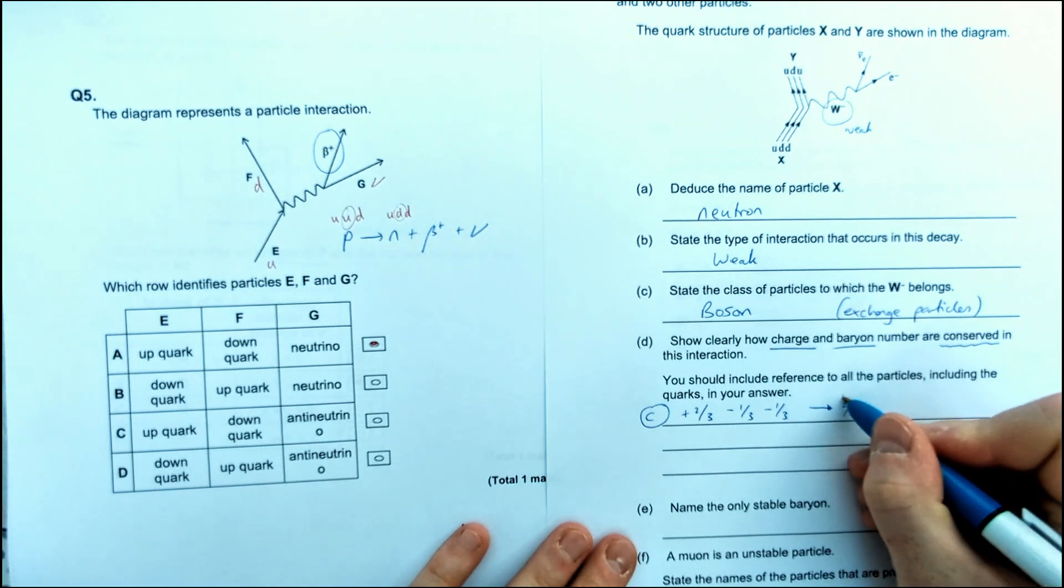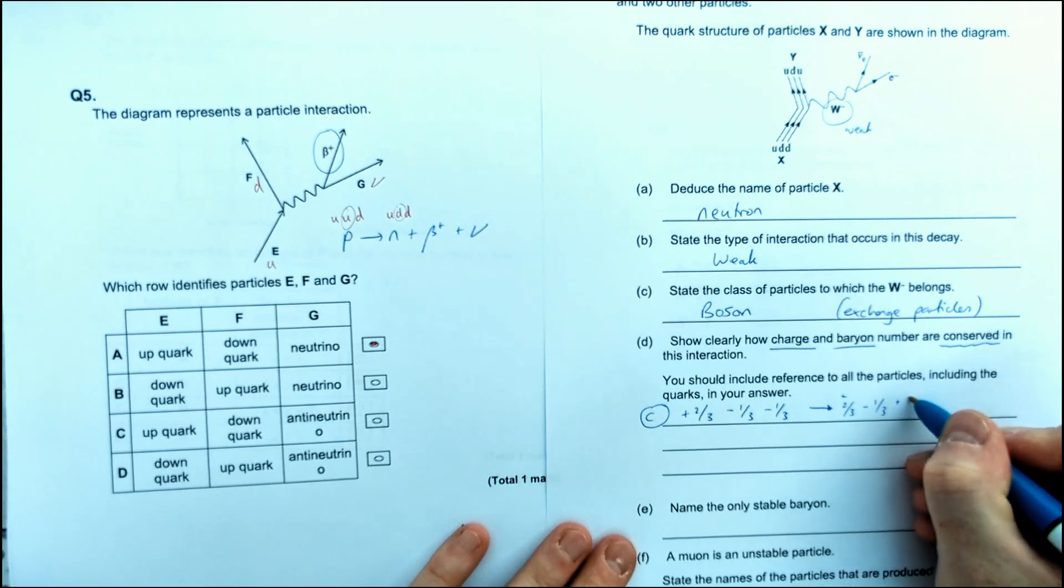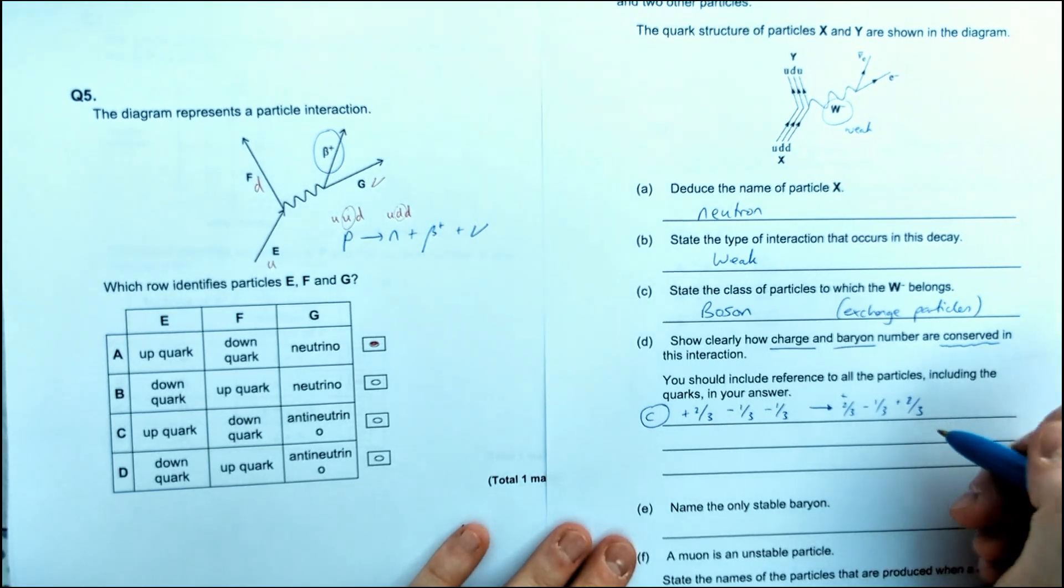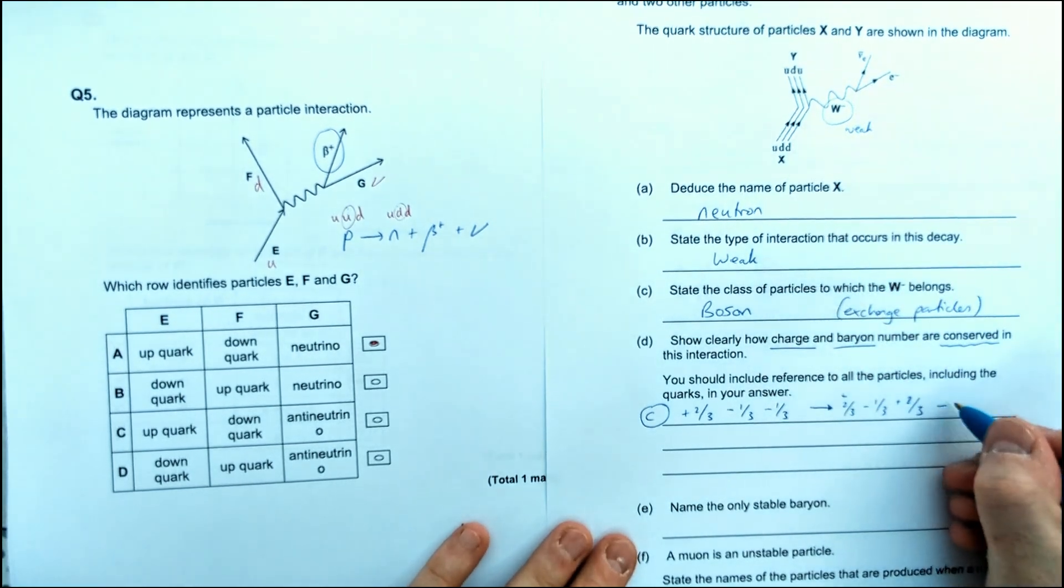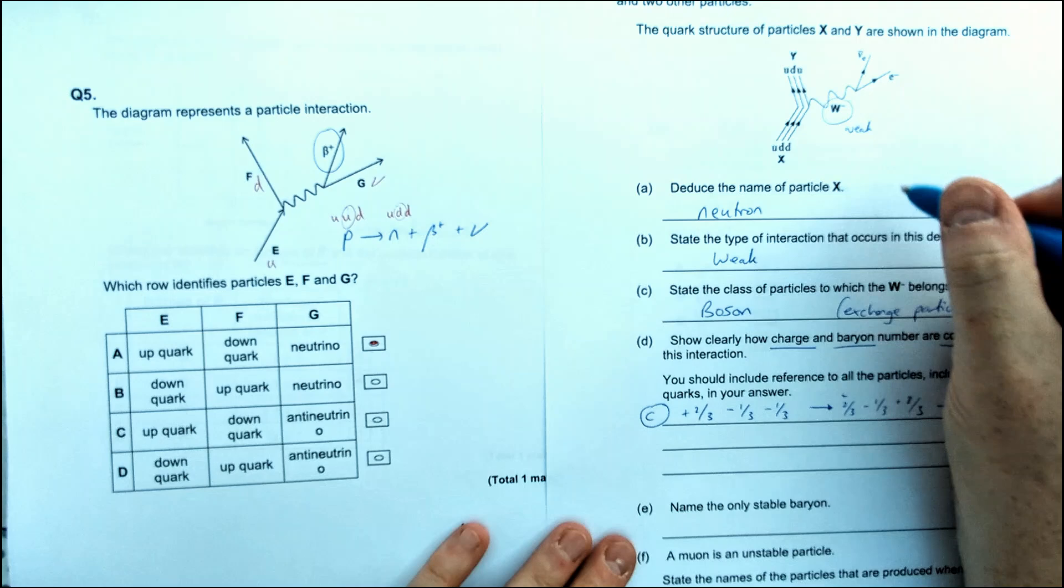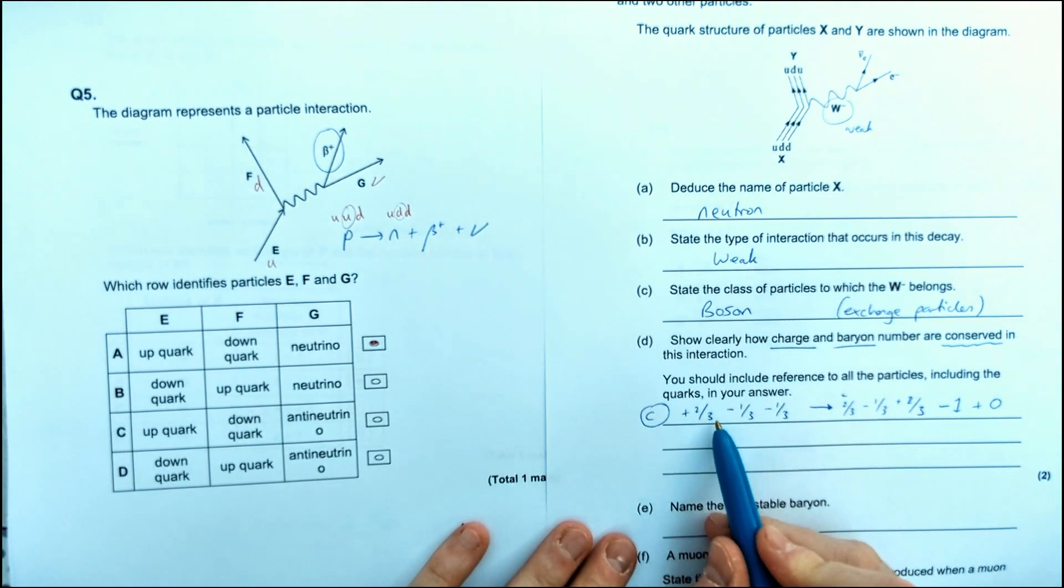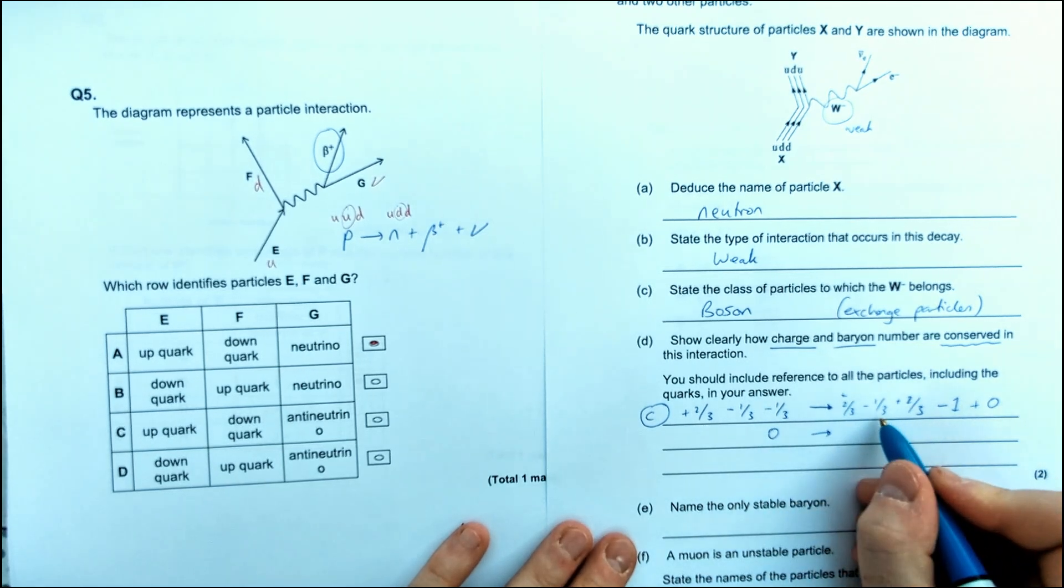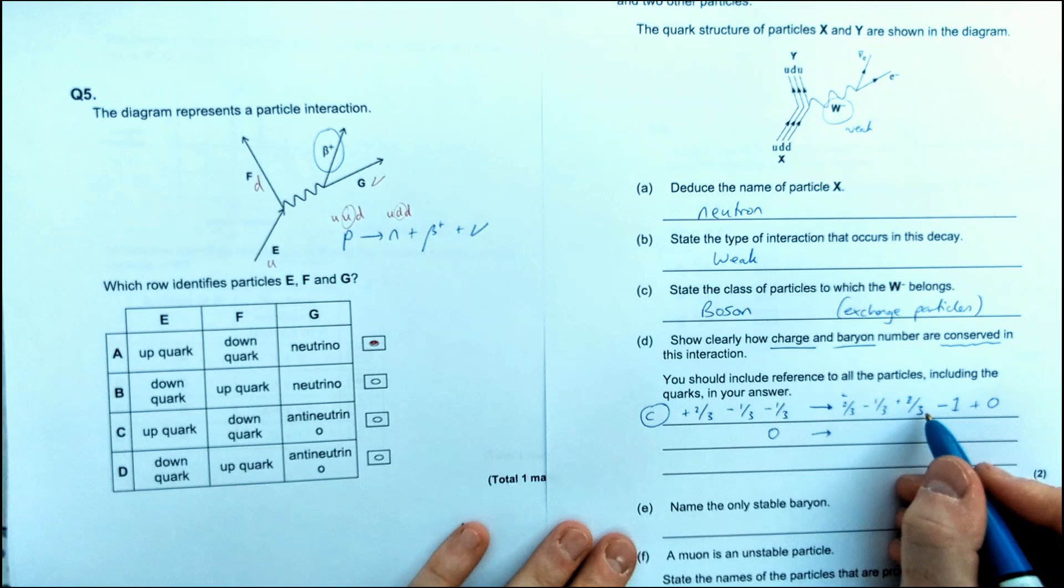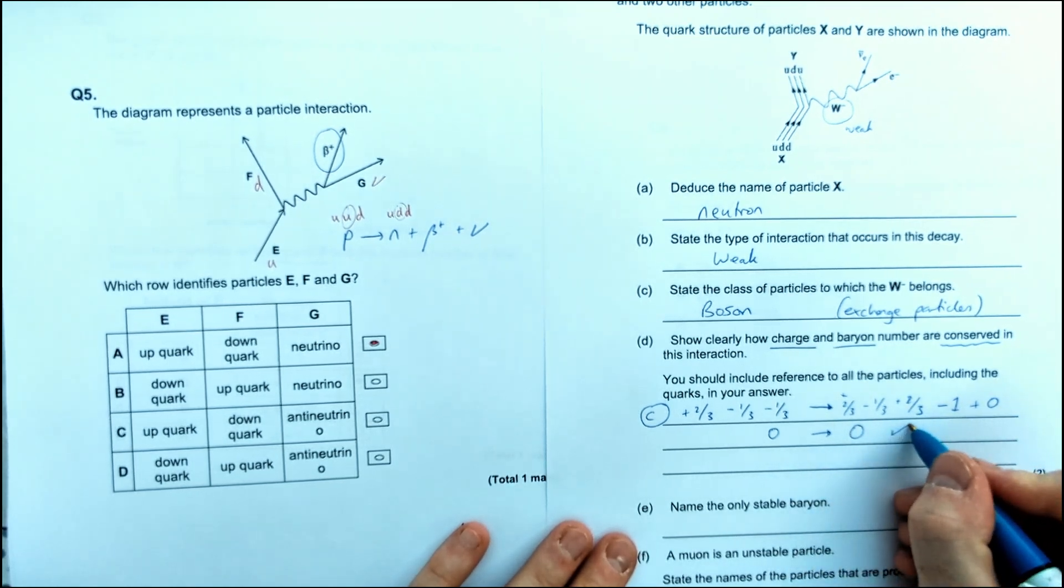And then we've got, on the other side, we've got now up, and then we've got down, and we've got up again. And then, if we look at the charge of the other particles we've got, we've got minus one for our electron. And then we've got a neutrino is nothing. So let's have a look. So we've got plus two-thirds, minus a third, minus a third. That gives zero, makes plus two-thirds, minus a third, and then plus two-thirds. That's one, minus one, plus zero makes zero. So therefore, it's conserved.